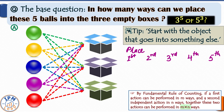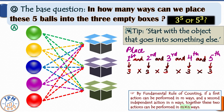By the fundamental rule of counting we can place all balls together — the first and the second and the third and the fourth and the fifth ball — in 3 × 3 × 3 × 3 × 3 ways. Remember, 'and' means multiply, so our answer is 3 raised to the power of 5.